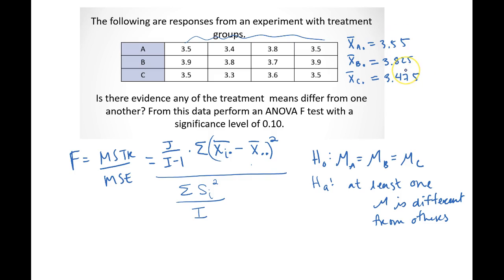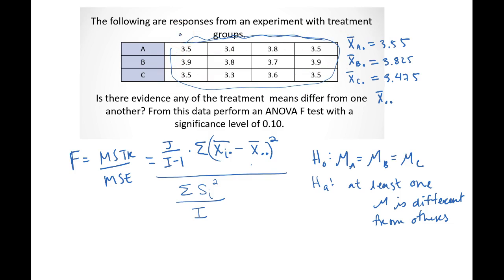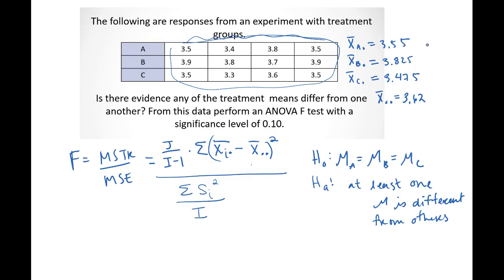Now I can calculate the grand mean, X-bar dot dot, by taking the average of all response values. That overall grand mean equals 3.62. In addition, I want to take the variances of all these values. The variance is the square of the standard deviation, so if I calculate the standard deviation on a computer, I need to square it to get the variance.